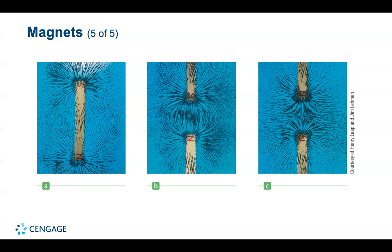Forensic scientists use a technique similar to this to find fingerprints at a crime scene. One way to find latent or invisible prints is by sprinkling a powder of iron dust on a surface. The iron adheres to any perspiration or body oils present and can be spread around on the surface with a magnetic brush that never comes in contact with the powder or the surface.